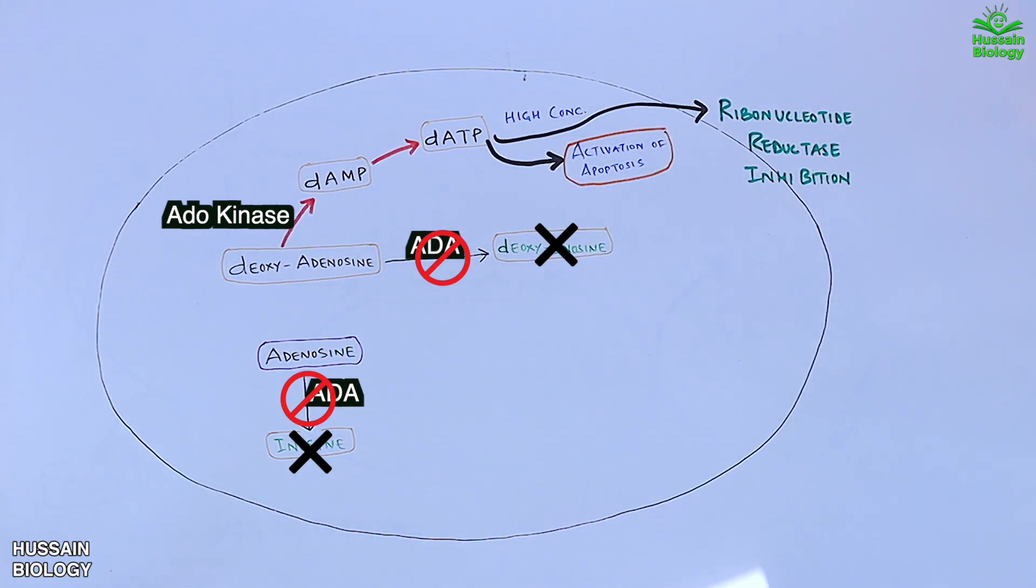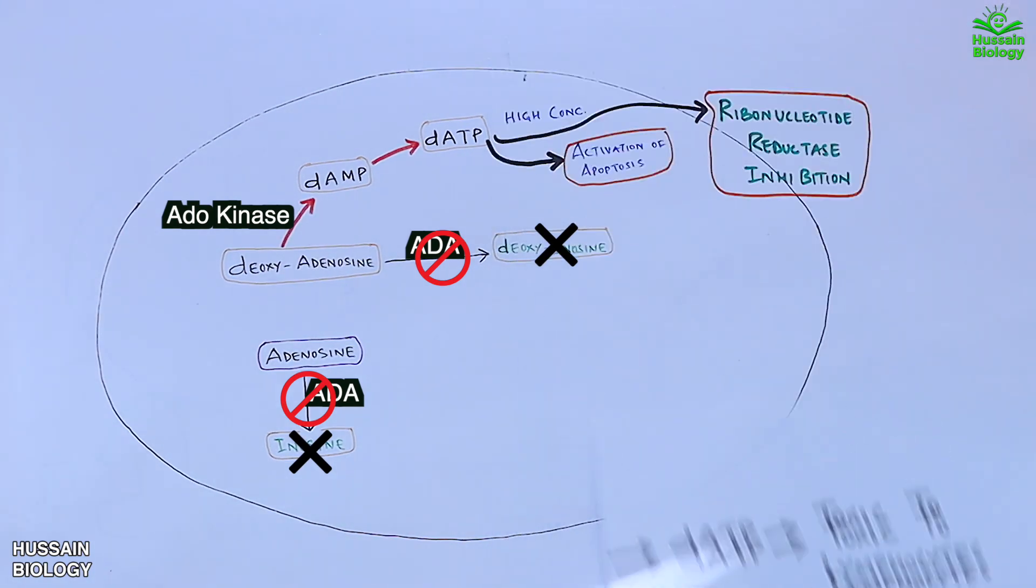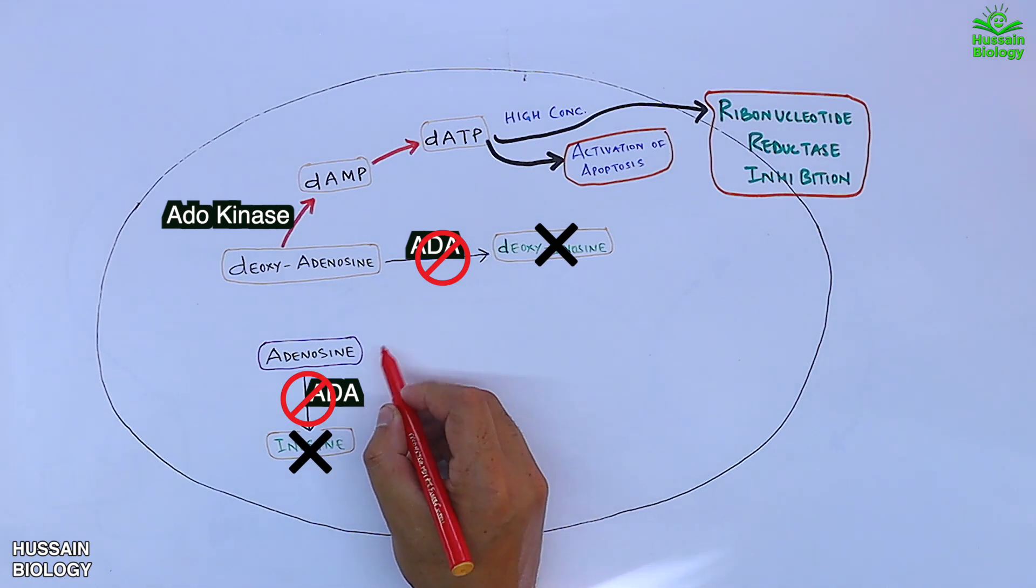So in nutshell, we see this dATP is toxic to lymphocytes and it leads to lymphopenia. On the other hand, we have the adenosine molecule which is getting accumulated within the cell in the absence of ADA enzyme.